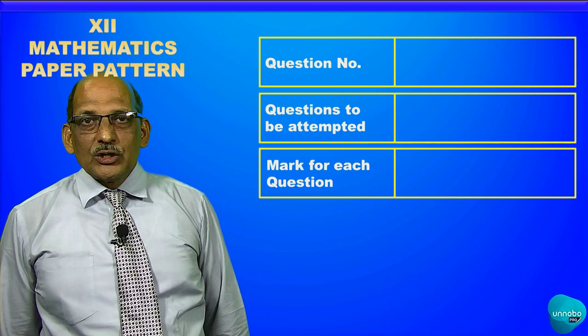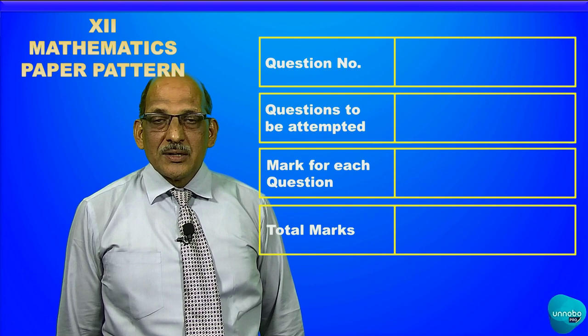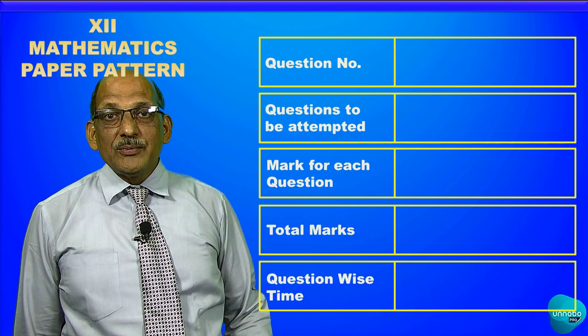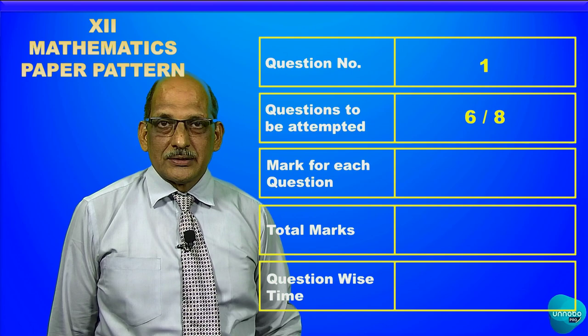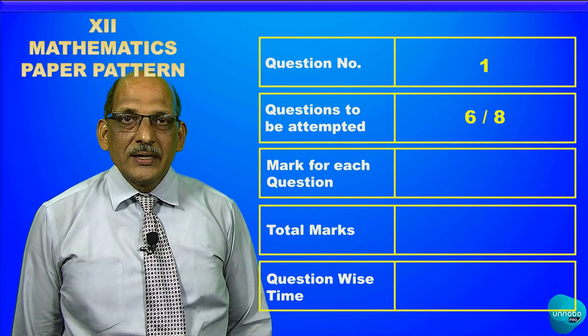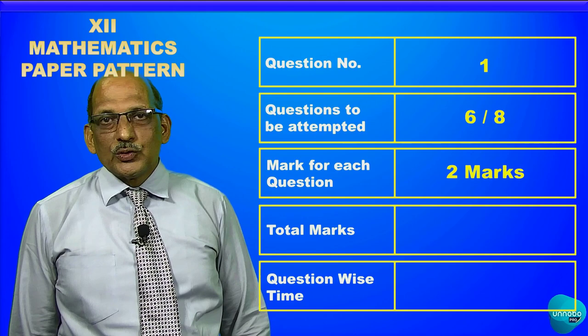When you look at a particular question, see how many questions you have to attempt, the marks for each question, and total marks for that question, and the time to be allotted to complete that question. In question number one, students have to solve six out of eight questions. Each question carries two marks.